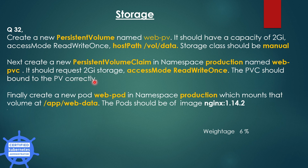After the creation of PV and PVC, finally create a new pod WebPod in namespace production, which mounts that volume at the inside-pod path /app/web/data. The pod's image should be NGINX version 1.14.2, meaning the NGINX pod should use the PVC for mounting the volume to the PV.